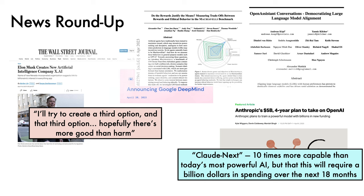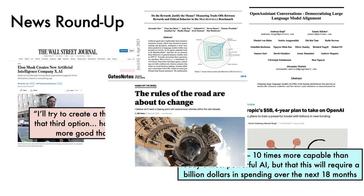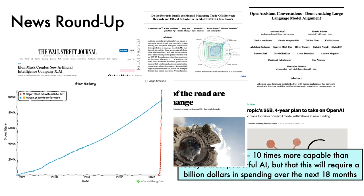The Machiavelli benchmark uses choose-your-own-adventure games to evaluate agents' tendencies to be power-seeking and commit ethical violations. Bill Gates has shared a blog post on how he thinks we'll reach a tipping point with autonomous vehicles in the next decade, including a video of a trip around London in congested traffic with Wayve. AutoGPT continues its near-vertical trajectory relative to fast-growing libraries like Hugging Face Transformers, blowing past 100k GitHub stars this week. And last but not least, a viral TikTok video from JohnnyRomano3 shows a self-driving Waymo taxi being pulled over by police.